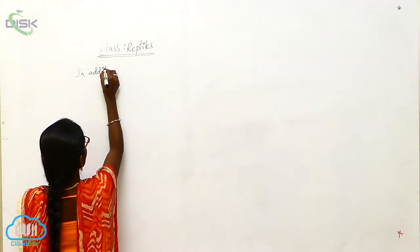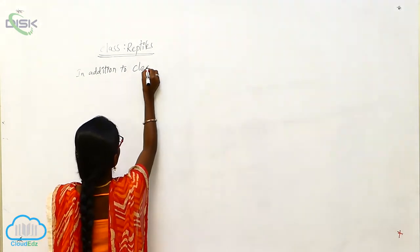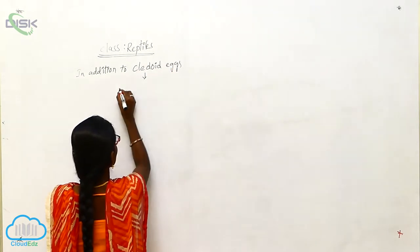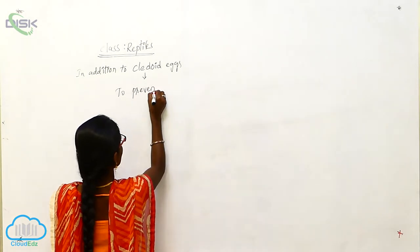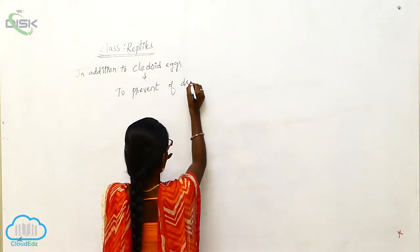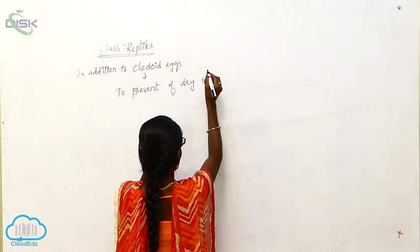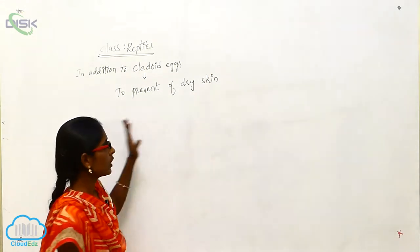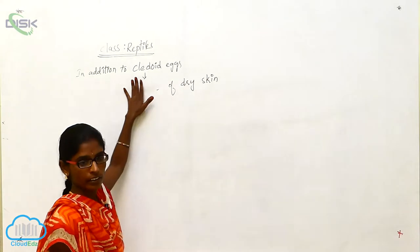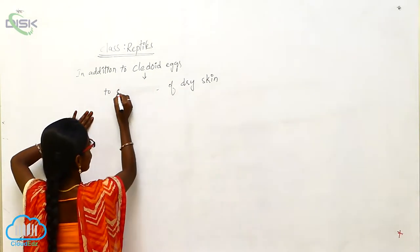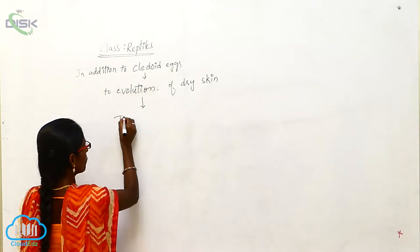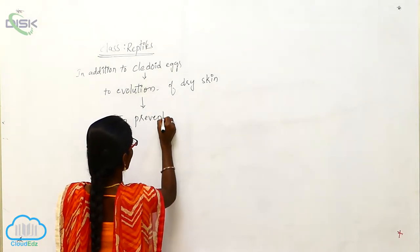In addition to cleidoic eggs to prevent dry skin, here dry skin to prevent — in addition to cleidoic eggs — the evolution of dry skin and cleidoic eggs is to prevent water loss.